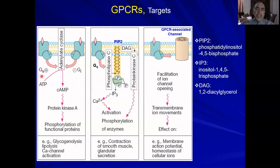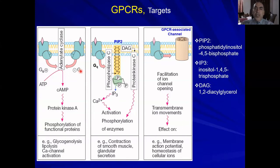The second type, Gi, works identically but in the opposite direction. The receptor is activated, the G-protein reaches the GTP status, but Gi is inhibitory. Please remember this mnemonic: GI = inhibitory, GS = stimulatory. GS stimulates adenylate cyclase, converting ATP to cyclic AMP. GI inhibits adenylate cyclase, inhibiting the conversion of ATP to cyclic AMP and inhibiting the phosphorylation of proteins — the opposite of Gs.